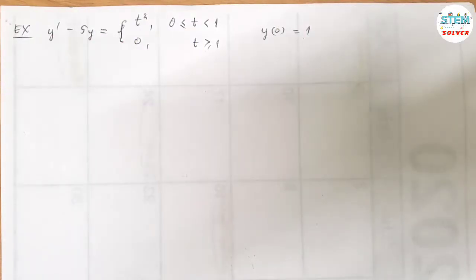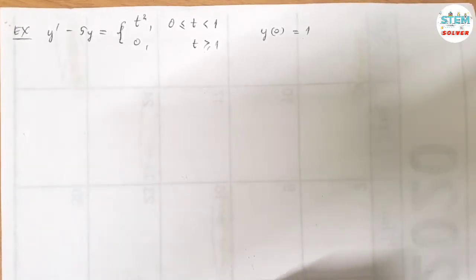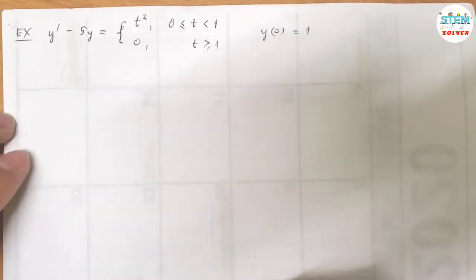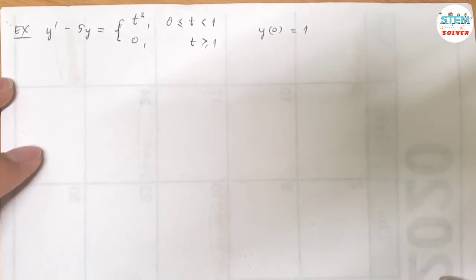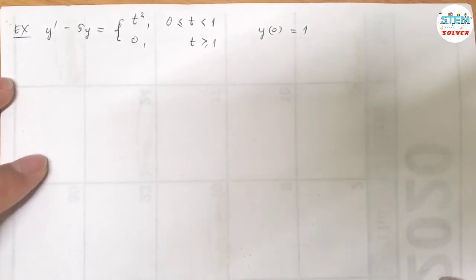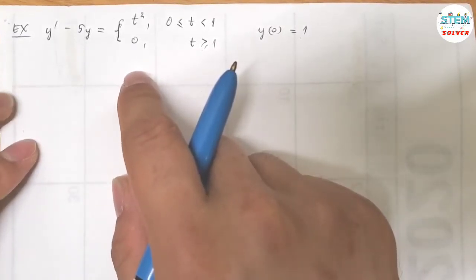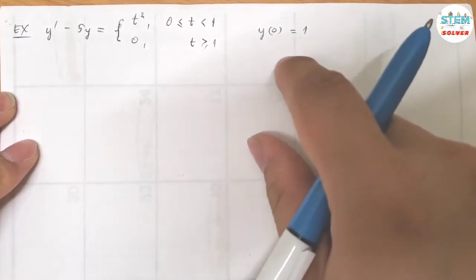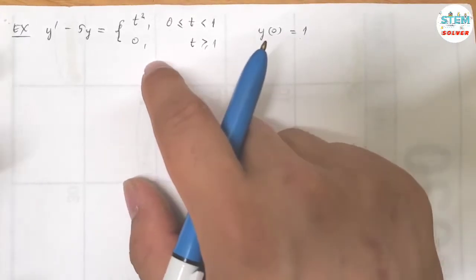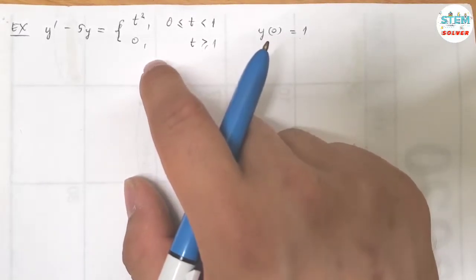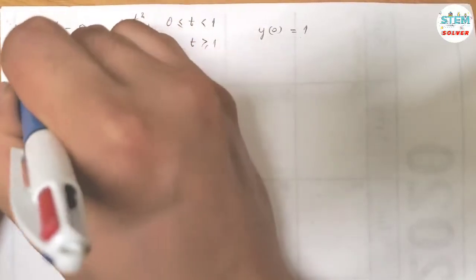Using the Laplace Transform to solve the initial value problem. You are given this piecewise function and the initial condition. First, apply the Laplace Transform on both sides. But before doing that, we need to rewrite this piecewise function in one line. We're going to use the unit step function to do that.